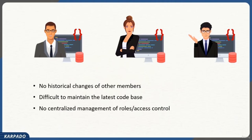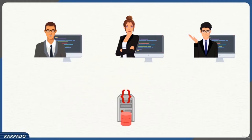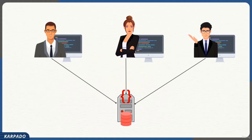Another problem is no centralized management of roles or access control. For example, if Sundar wants to restrict Luke to only access certain folders in the project, he has no control over that with a local version control system. Sundar researched the issue and came up with a so-called centralized version control system — this time, instead of having the data store and code in local environments, everything is on a centralized server. Everybody picks the code from that server, works on it, and sends it back so others can use their code.